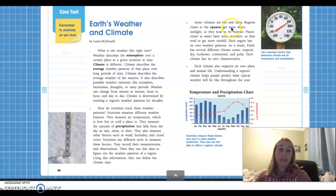Paragraph three, some climates are hot and rainy, like the rainforest. Remember we talked about that yesterday? Regions closer to the equator get more direct sunlight so they tend to be warmer. Places closer to water have more moisture so they tend to get more rainfall. Each region has its own weather patterns. As a result, Earth has several different climate zones: tropical, dry, moderate, continental, and polar. Each climate has its own characteristics. Each climate also supports its own plant and animal life. Understanding your region's climate helps people predict what typical weather will be like throughout the year.